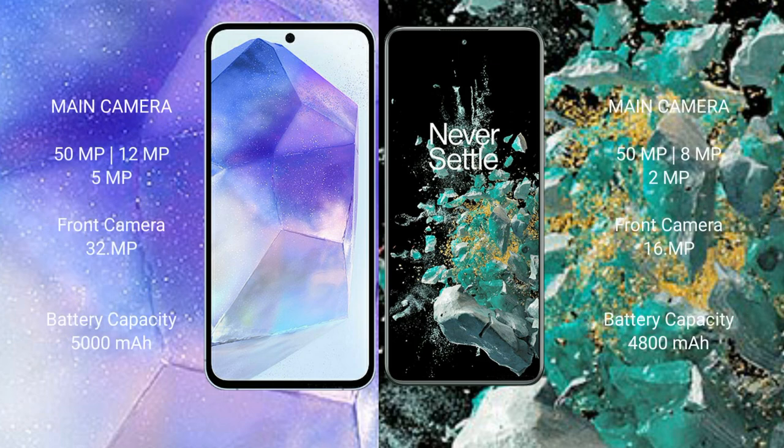Samsung Galaxy A55 features a rear triple camera setup: 50MP main, 12MP ultrawide, 5MP macro, and a 32MP front camera. OnePlus 10T features a rear triple camera setup: 50MP main, 8MP ultrawide, 2MP macro, and a 16MP front camera.